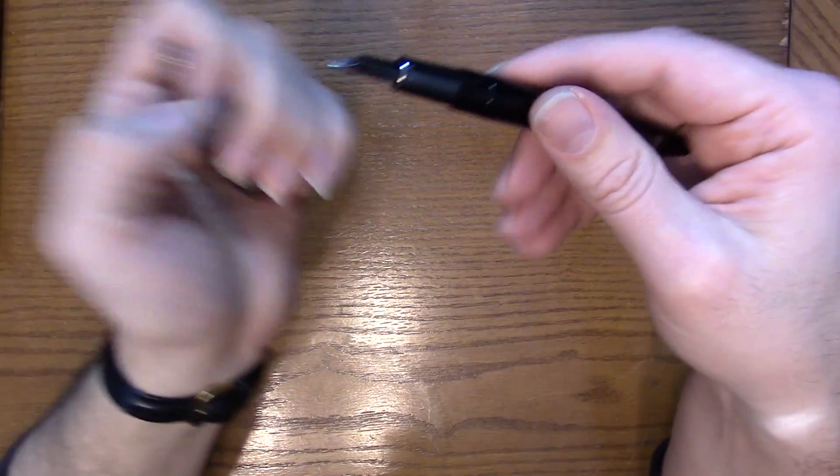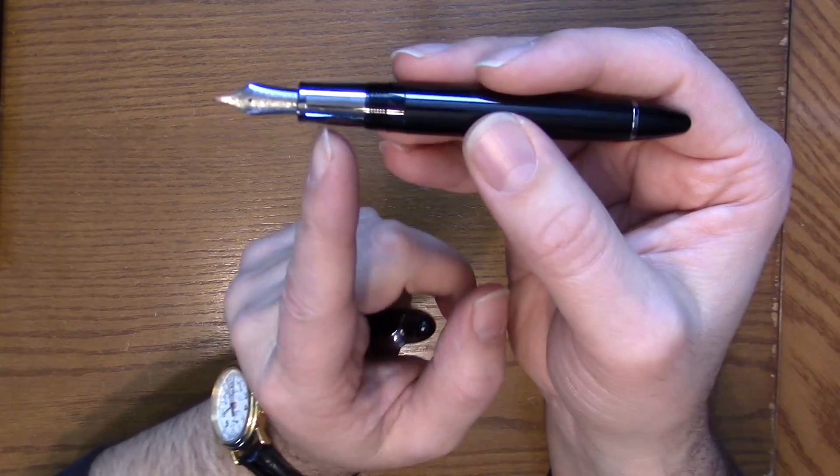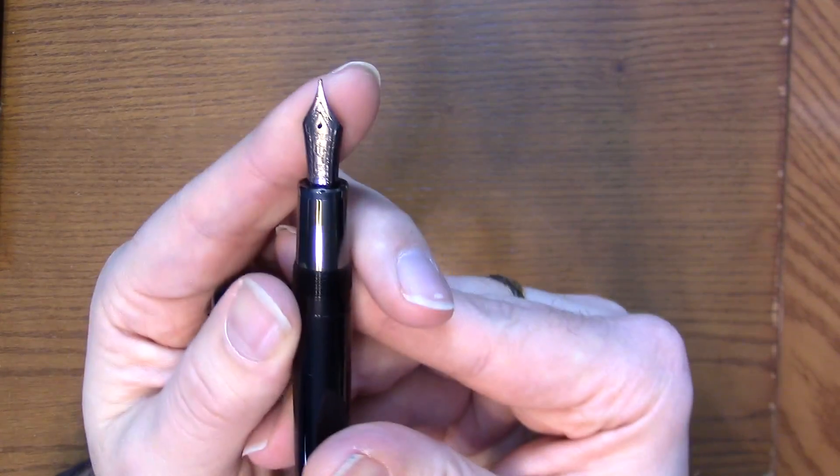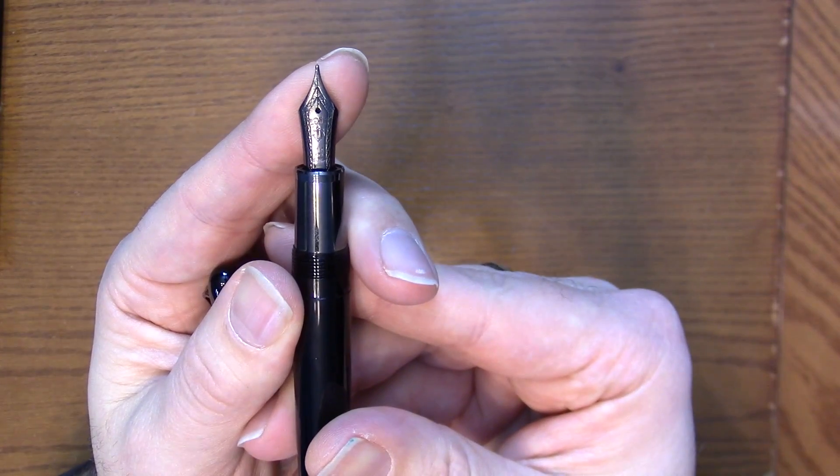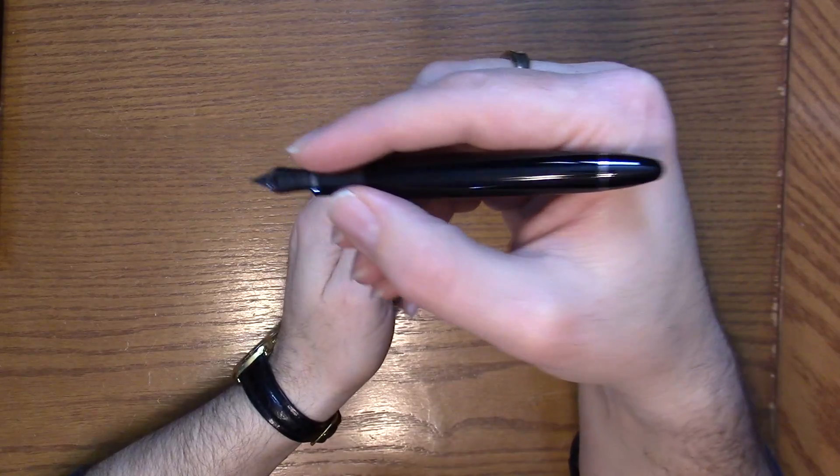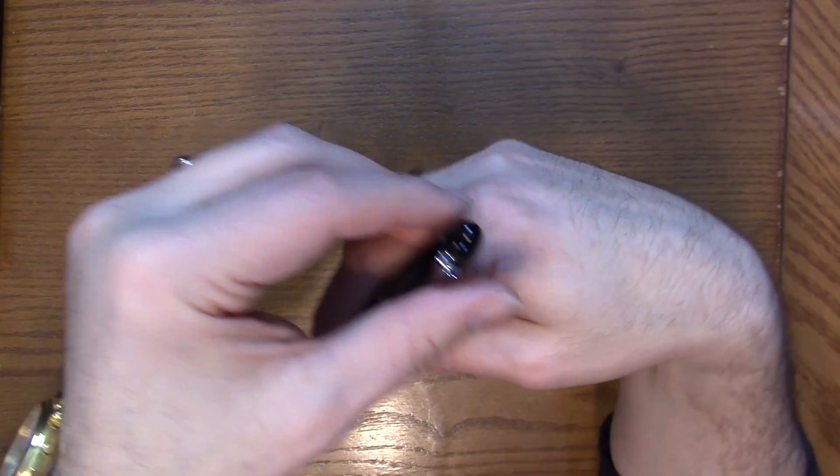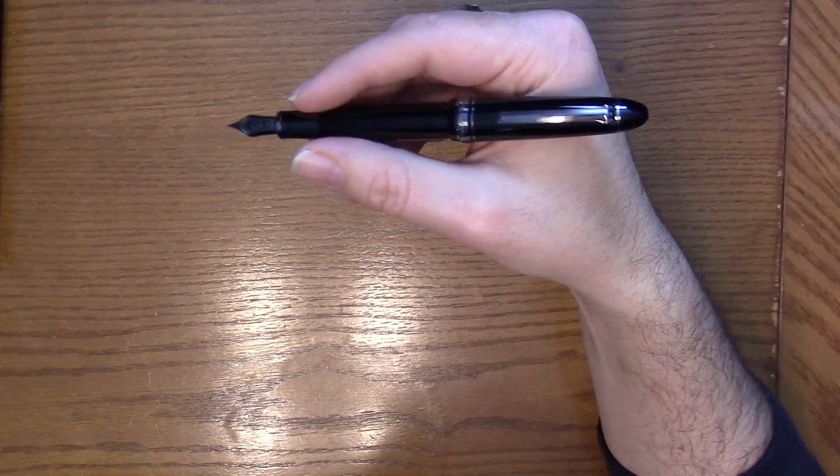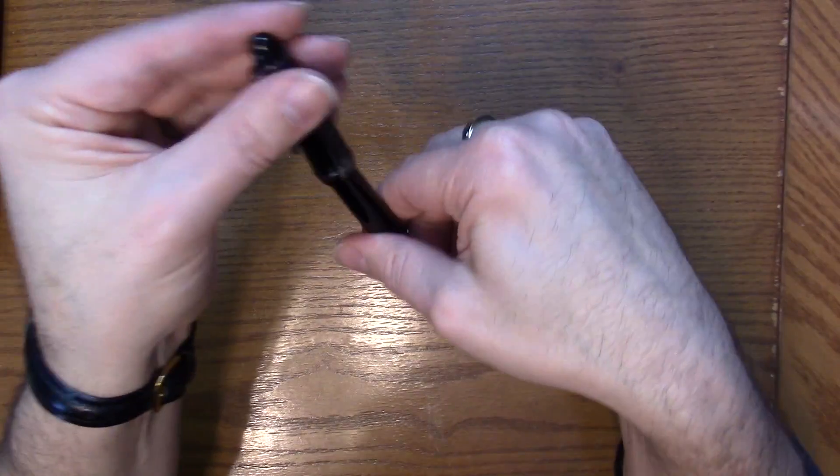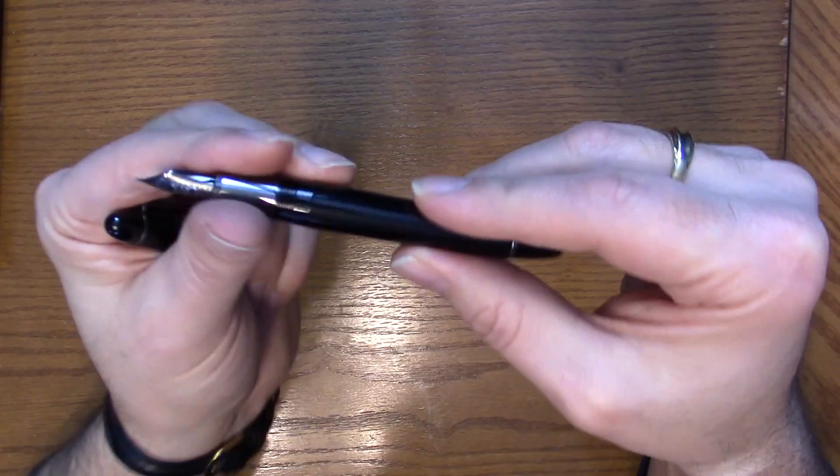As we open it up, what makes this different from the Pro Gear Imperial Black is this has a metal section with the 21 karat nib. Nice look to it. This makes your center of gravity closer to the paper - it balances out a little bit. Sailor's a fairly light pen, but this really helps get that center of gravity closer to the page.